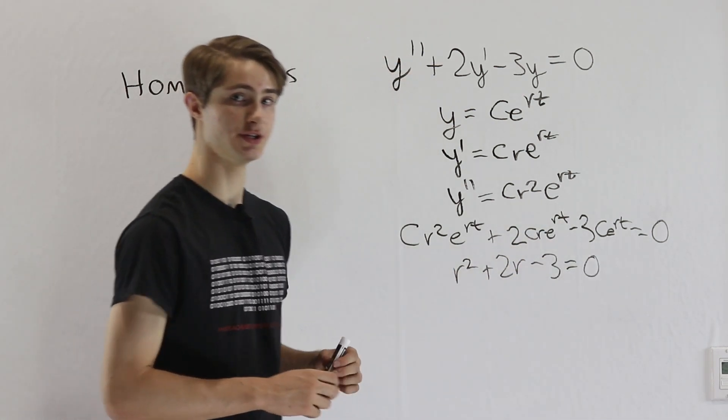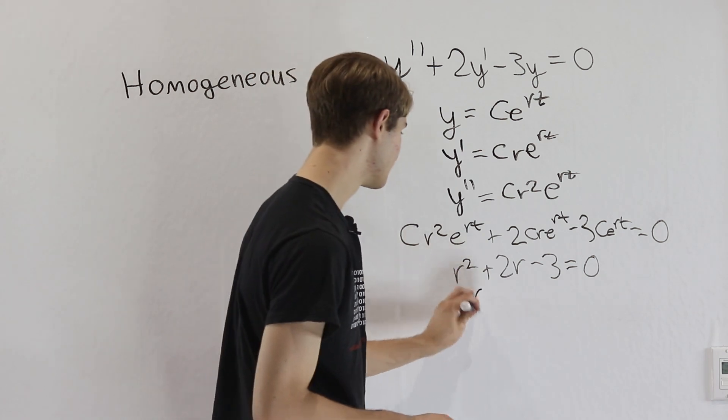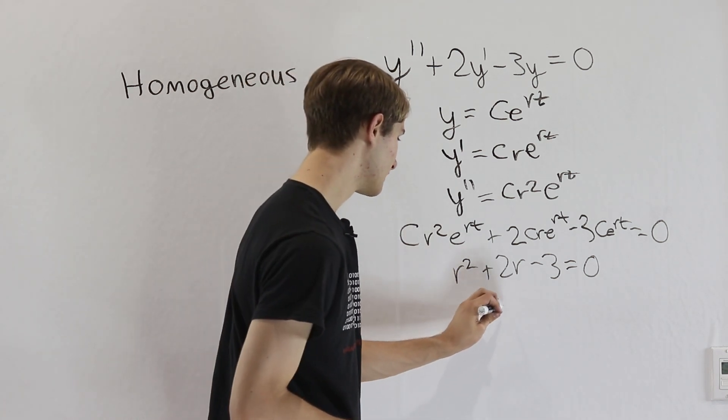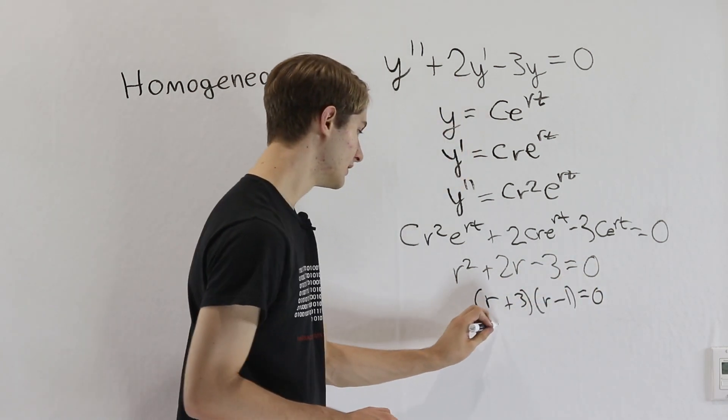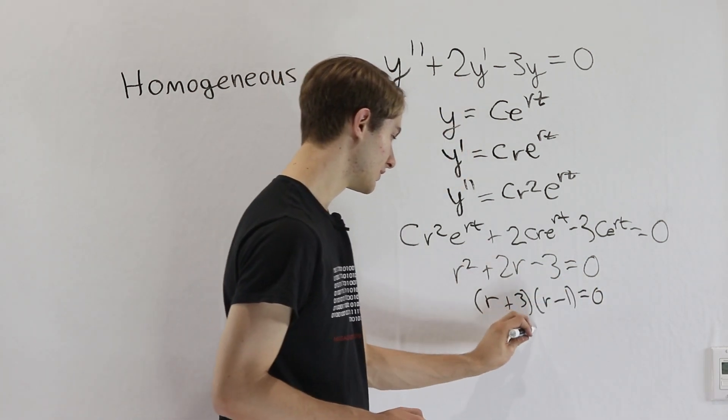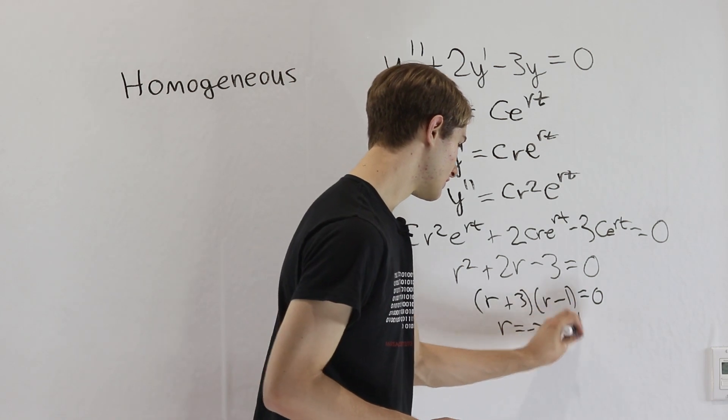And if we want to solve this equation, well, we can just factor it because it's a nice polynomial. So we'll get r plus 3 times r minus 1 equals 0. And that gives us our solutions of r equals negative 3 and r equals 1.